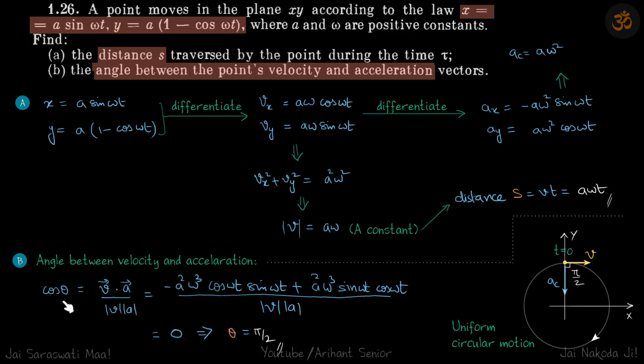Sorry, the cos θ value becomes zero, which means the angle between velocity and acceleration is π/2.